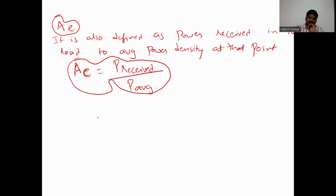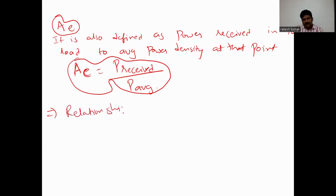So let us derive the very important relationship between directivity and effective aperture area A. This is a very important derivation.